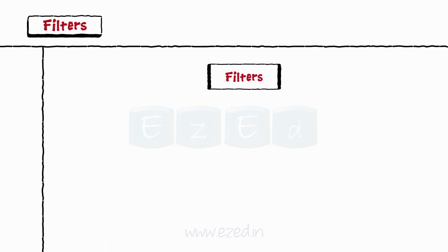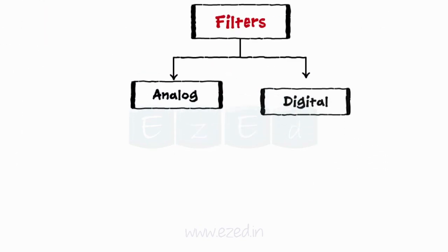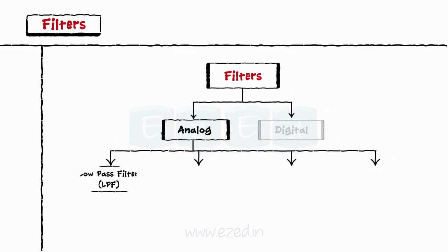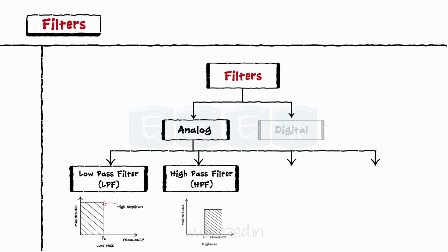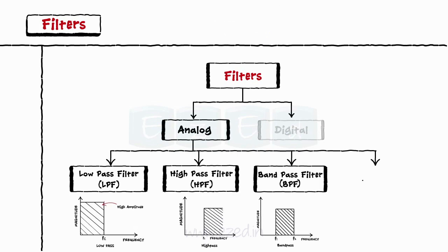Filters are broadly classified into analog filters and digital filters. We will restrict ourselves to study of analog filters only. Analog filters are again classified into four types: low pass filter, high pass filter, band pass filter, and notch filter.